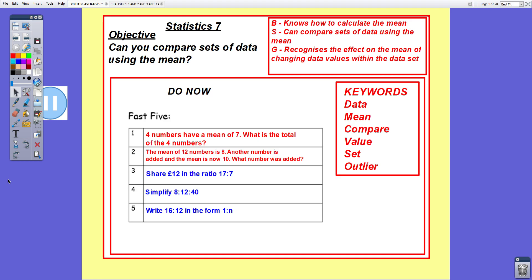Our keywords then: data, mean, compare, value, set, and outlier. And as usual now, a fast five do now, five questions, the first two on the current topic and the last three on the most recent topic.